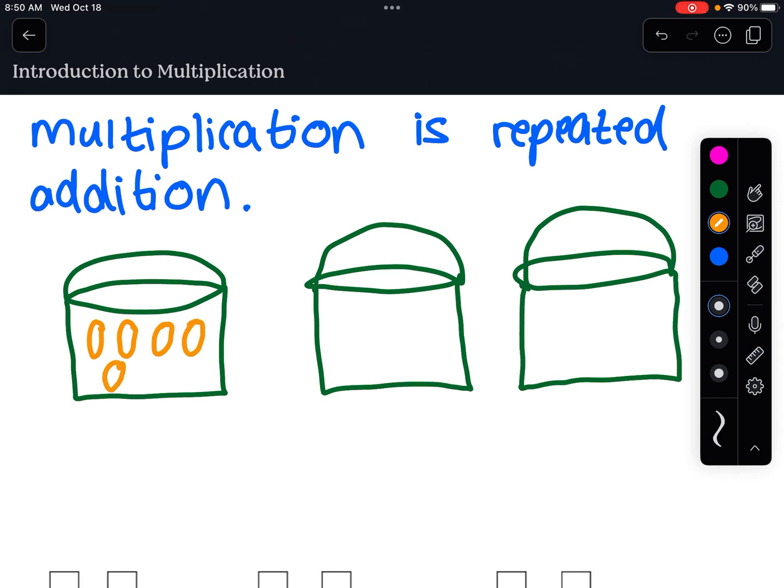Hopefully those look enough like eggs to you. One egg, two egg, three egg, four egg, five egg. Five eggs. One egg, two egg, three egg, four eggs, and five eggs again. So I've got five eggs for each of my three neighbors.